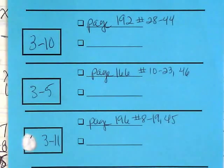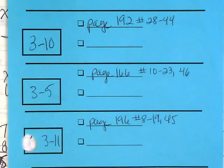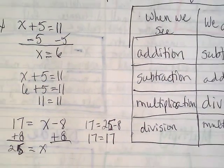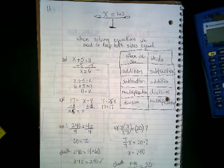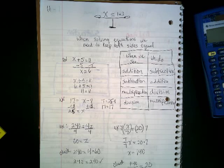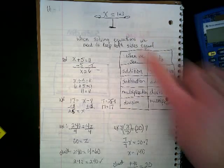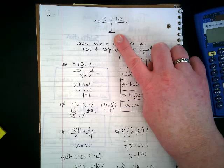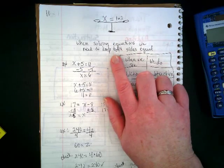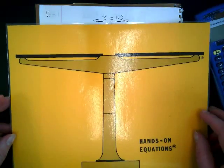Don't worry about 3-11, we'll work on that tomorrow. Before we start our work today, there's a couple of things I want you guys to think about. Turn to page 11 in your spiral. Do you guys see what we drew on page 11? What's at the top of the page here? A scale. We drew this way back when we were reviewing how to solve equations with just whole numbers, and we wrote in here that when solving equations we need to keep both sides equal.